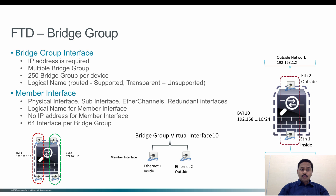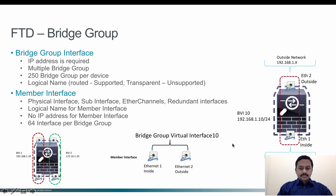Each bridge group should have one or more member interfaces. These member interfaces can be either a physical interface such as Ethernet 1 or 2, a sub-interface with a VLAN, an EtherChannel interface, or a redundant interface. Each member interface should have a logical name defined, and it does not require an IP address. The maximum number of interfaces supported per bridge group is 64.